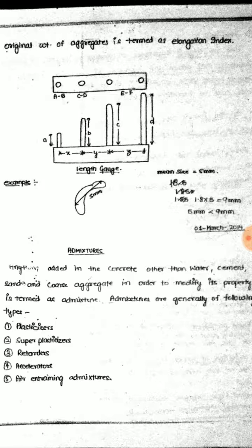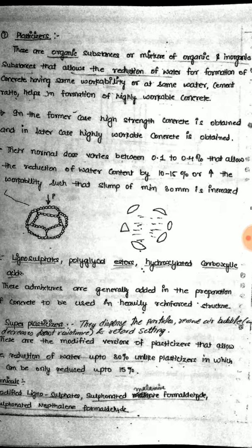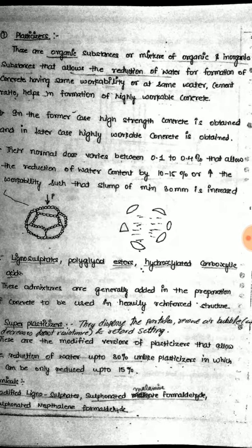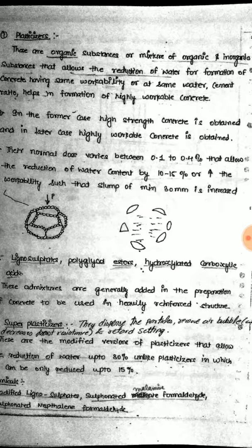Plasticizers are organic substances, or a mixture of organic and inorganic substances, that allow reduction of water for formation of concrete having same workability, or at the same water-cement ratio help in formation of highly workable concrete. In the former case, high strength concrete is obtained; in the latter case, highly workable concrete is obtained. Their normal dose varies between 0.1 to 0.4 percent, allowing reduction of water content by 10 to 15 percent, or increasing workability such that a minimum slump of 30 mm is increased.